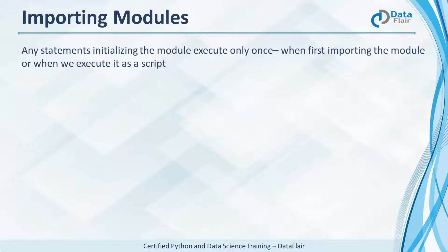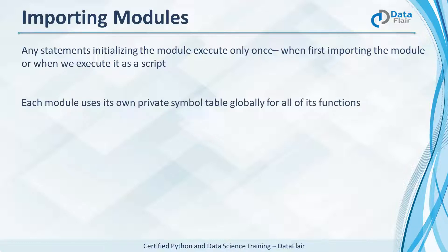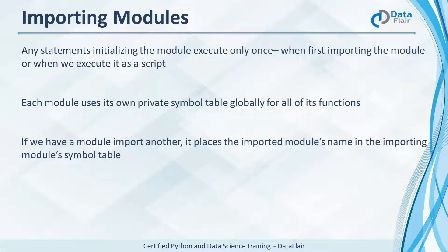If a module has some statements that perform some initializing, they execute only once — when you first import the module or when you're executing it as a script. If you must run them again, you can reload the module. Each module has its own private symbol table, which it uses globally for all its functions. This means you can access global variables in the module without worrying about name clashes. If you import one module in another, it places the imported module's name in the other's symbol table.